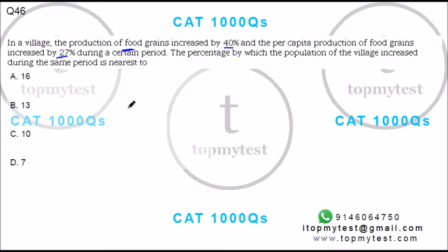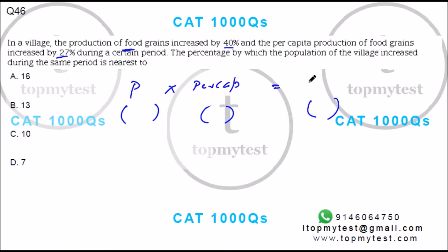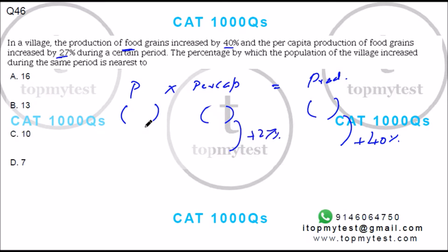So the village population increases. Let's look at the basic relation: population multiplied by per capita production equals total production. It says production of food grains increased by 40%, and per capita production increased by 27%. We need to find how much the population changed.